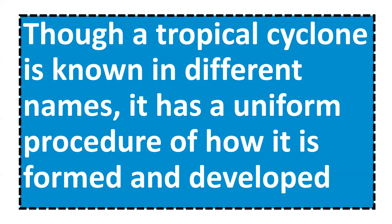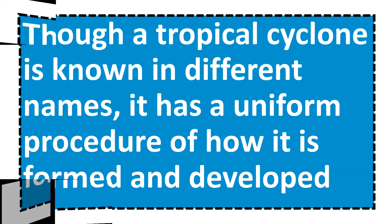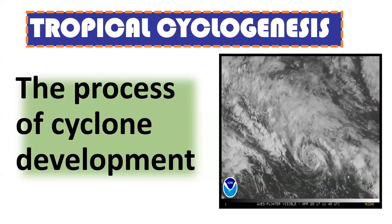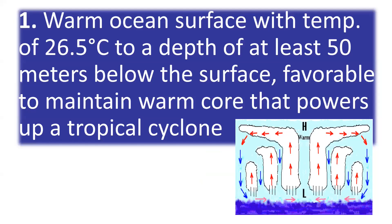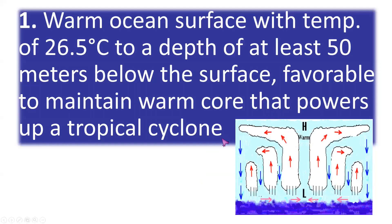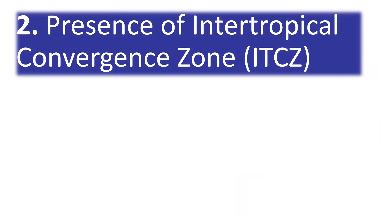Though a tropical cyclone is known by different names, it has a uniform process of how it forms and develops. Condition 1: a warm ocean surface with a temperature of 26.5 degrees Celsius to a depth of at least 50 meters is favorable to maintain the warm core that powers a tropical cyclone. Tropical cyclones form primarily over warm ocean waters, typically between 5 to 30 degrees latitude in both hemispheres, and this warm sea surface provides the necessary heat and moisture for their development.